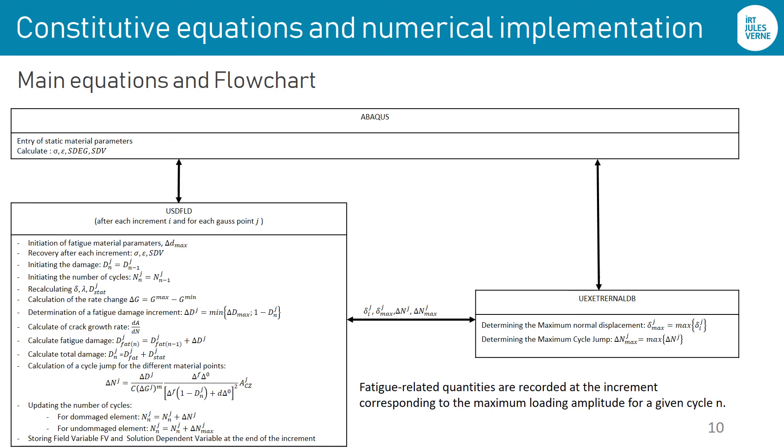At the end of the time increment, the USDFLD subroutine records the field variables and the solution dependent variables such as number of cycles, cycle jump, crack rate, and fatigue damage. This subroutine uses the UI external DB subroutine to access data calculated in previous increment.